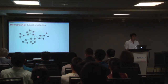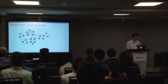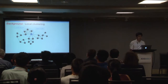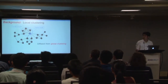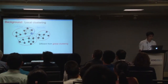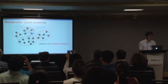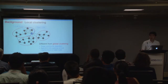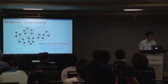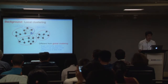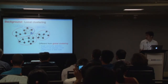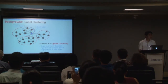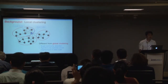Our work is about local clustering, where the idea is: given a network and a seed node, you want to find a local cluster containing that seed node. Note that this is different from traditional global clustering algorithms, which aim to partition the entire network into different pieces. The difference is mainly twofold. First, this is a targeted community detection problem, where the target is identified by the seed node. And second, most local clustering algorithms only explore a local neighborhood of the seed, which makes them much more scalable and faster.